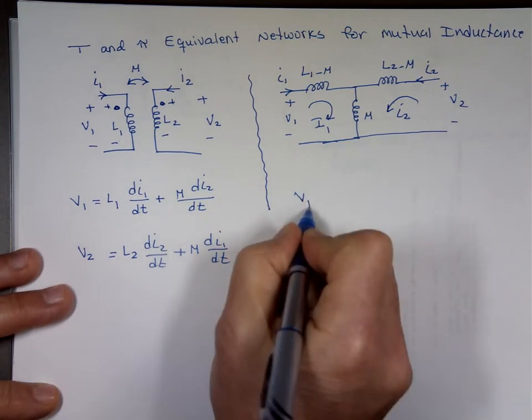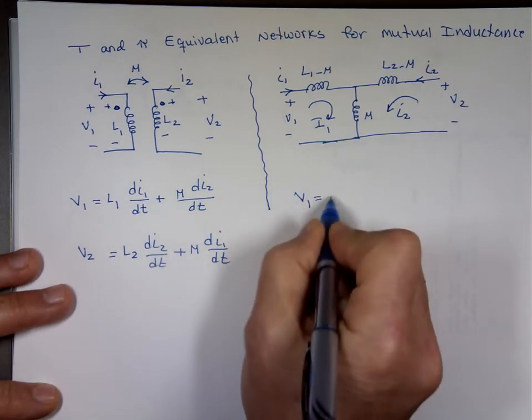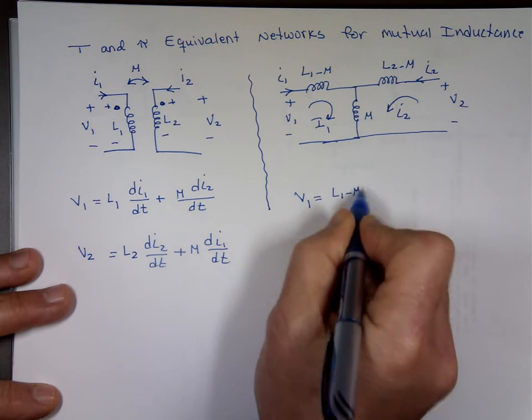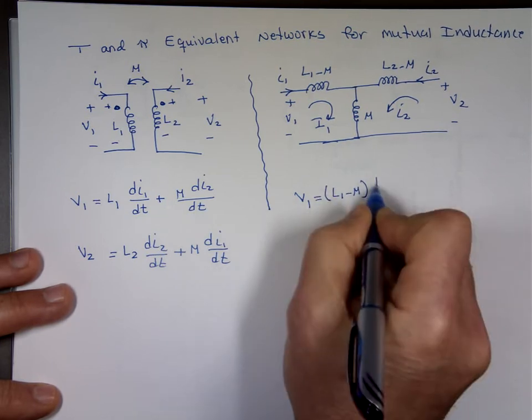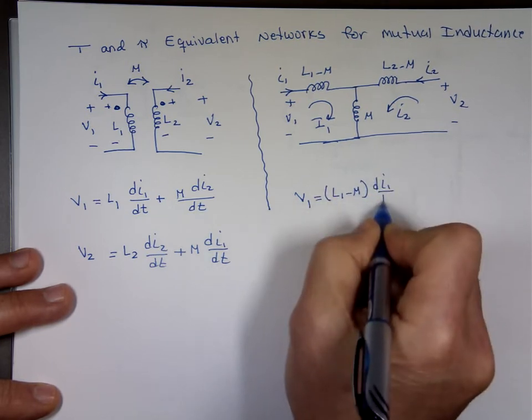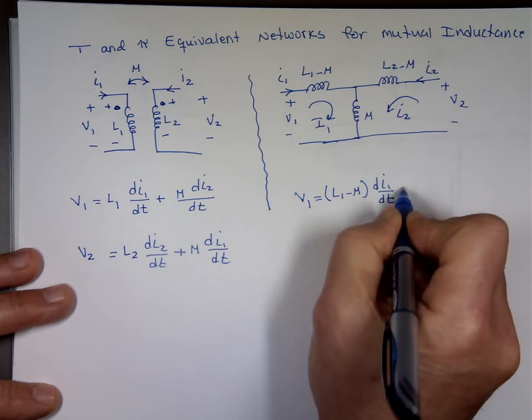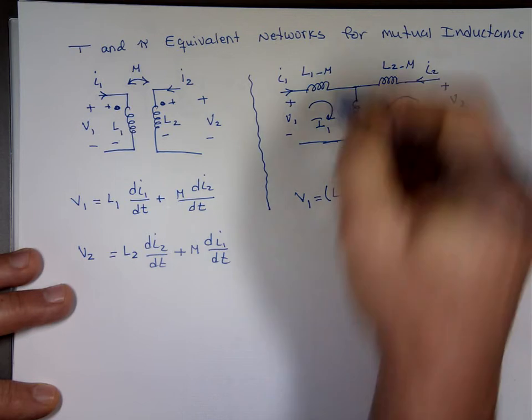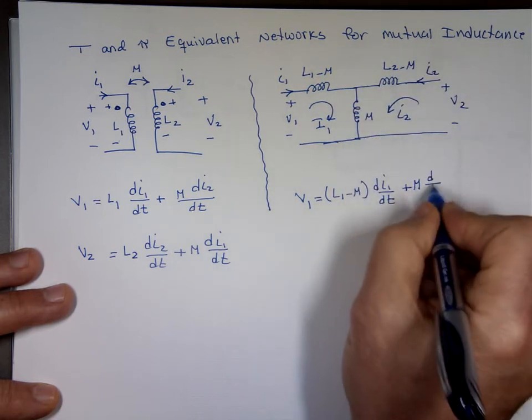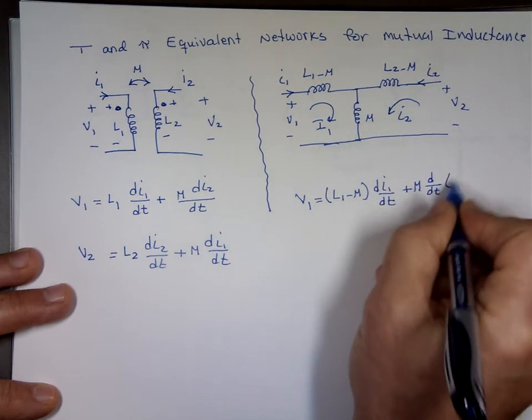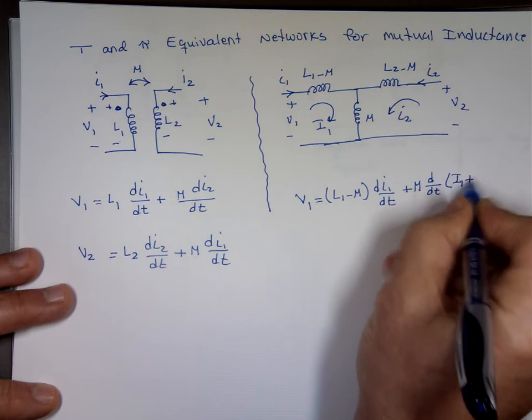So, V1, there's no mutual inductance here. L1 minus m di1 dt. Plus the mutual inductance times the current down, d dt. Plus the mutual inductance times the current down, d dt of what? I sub 1 plus I sub 2.